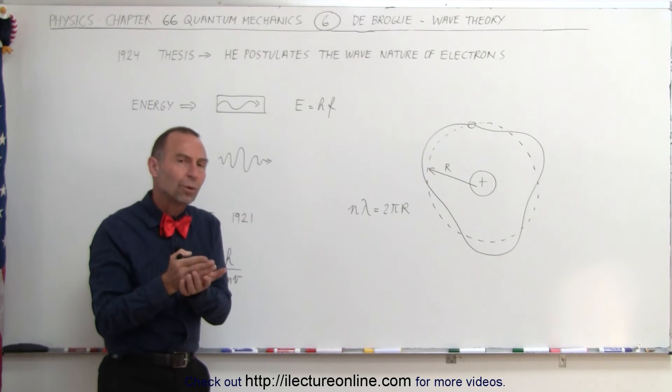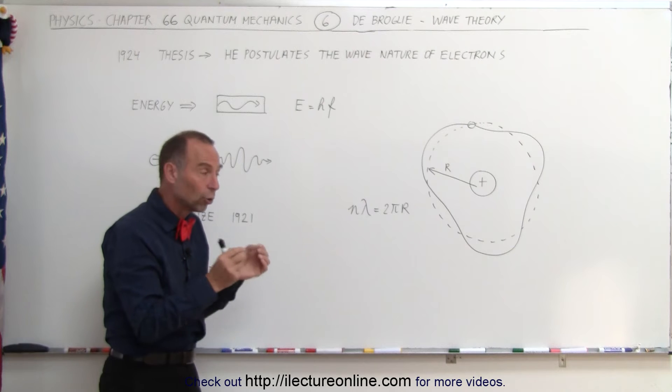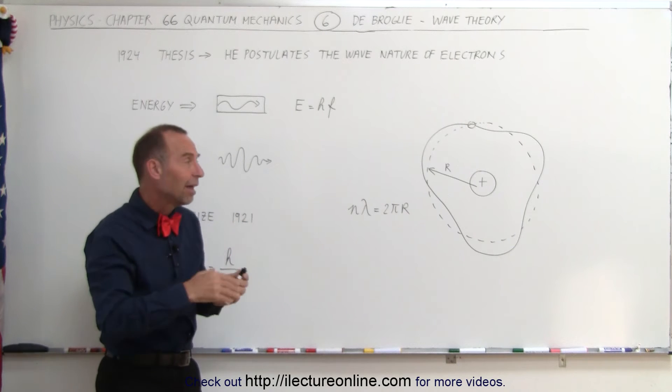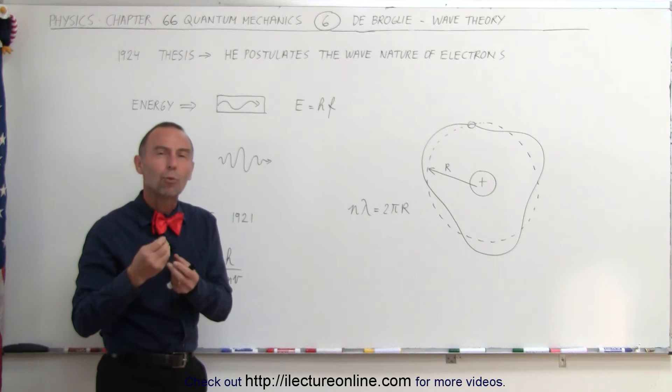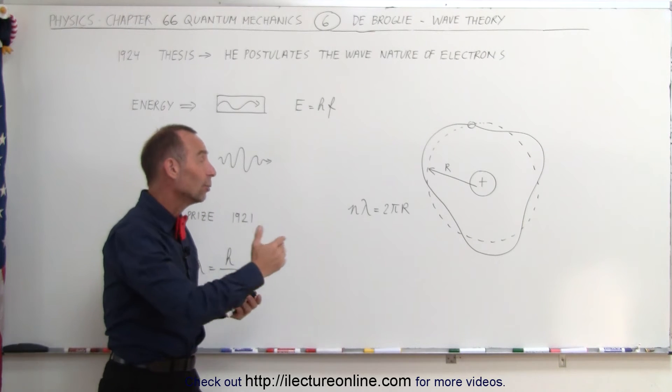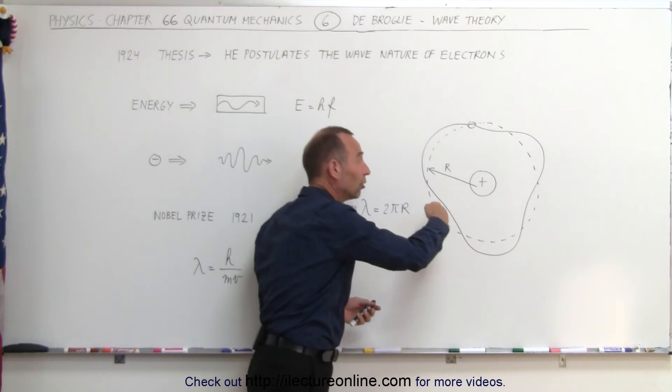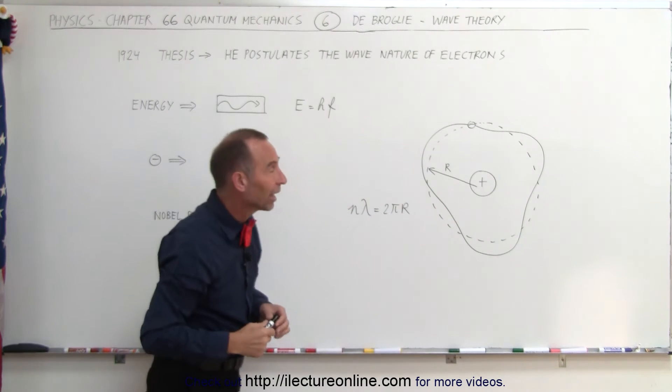So here again, we began to realize that things such as electrons would also exist in quantum states. And for that to be the case, we then realized that electrons then had to have wave-like properties, that as the electron zips around the nucleus, it acts like a wave with a wavelength.